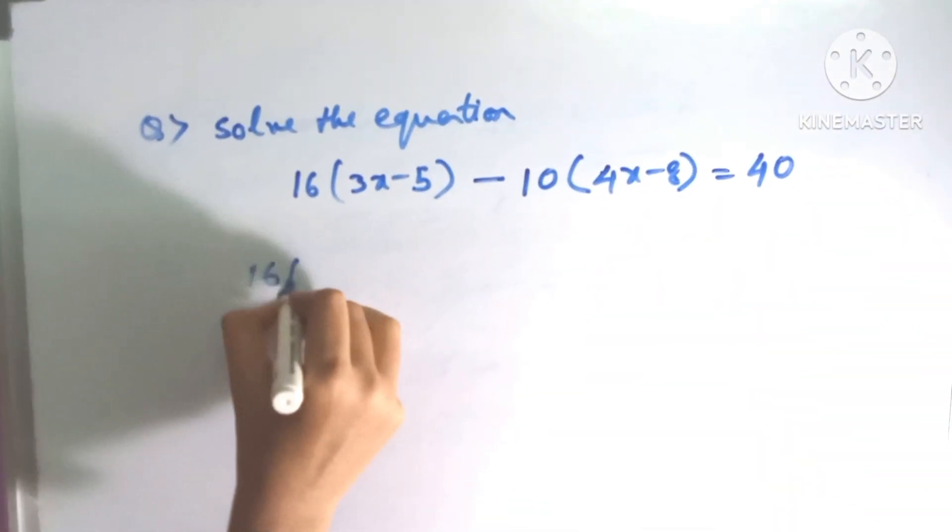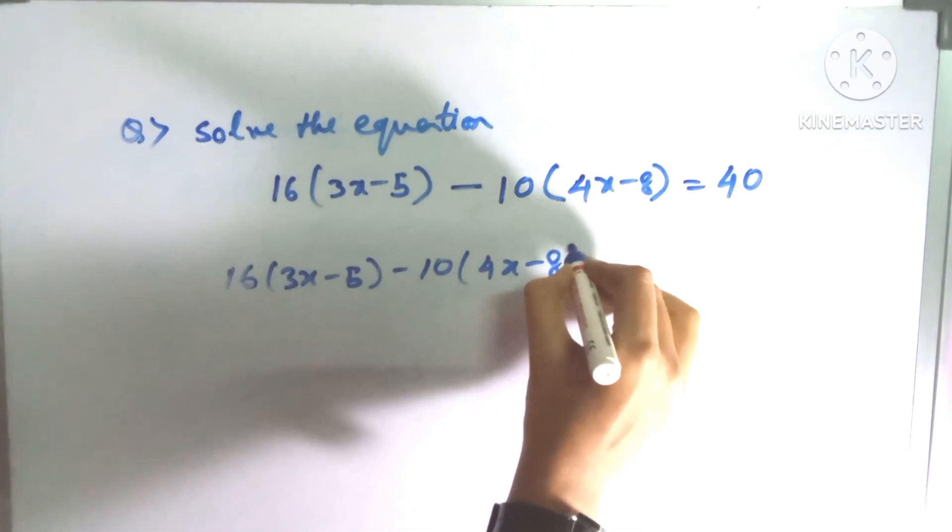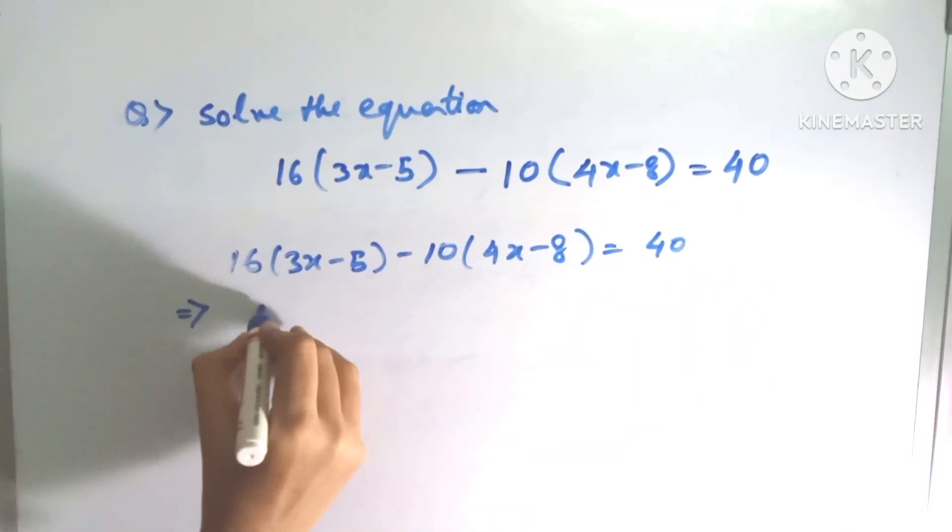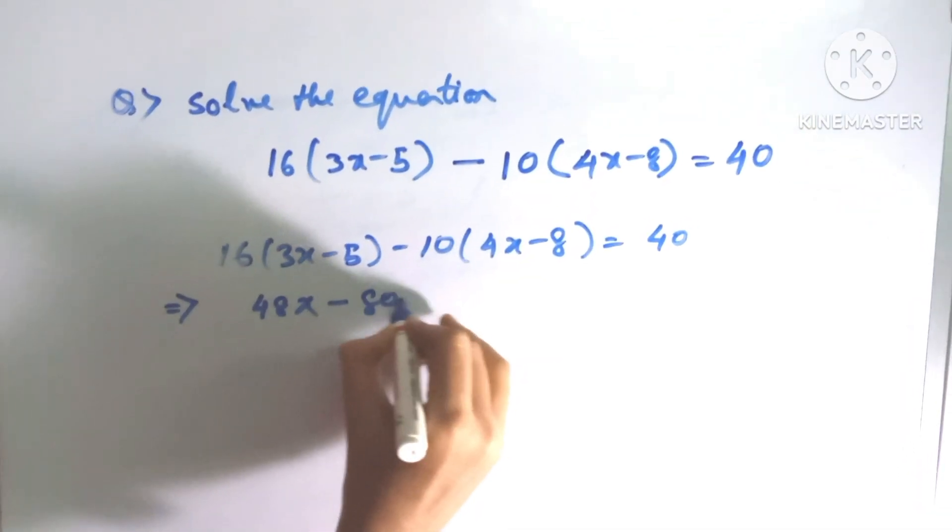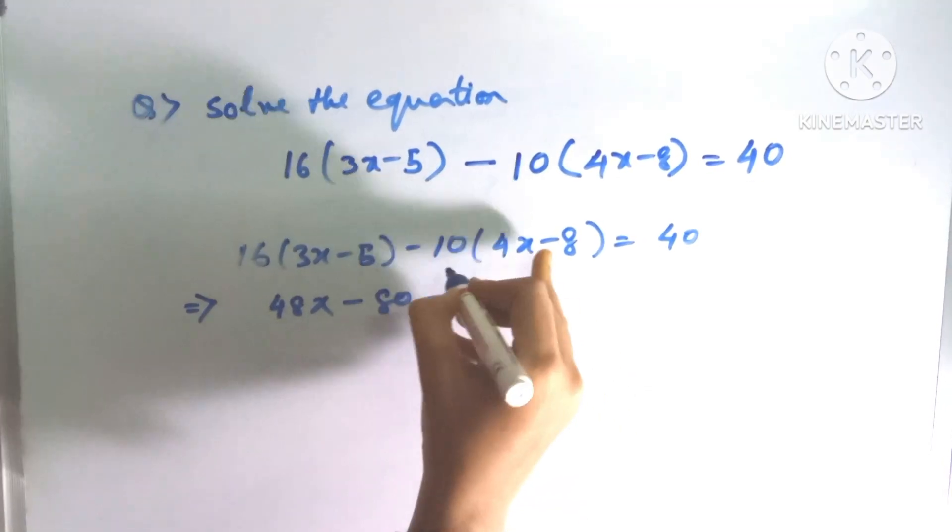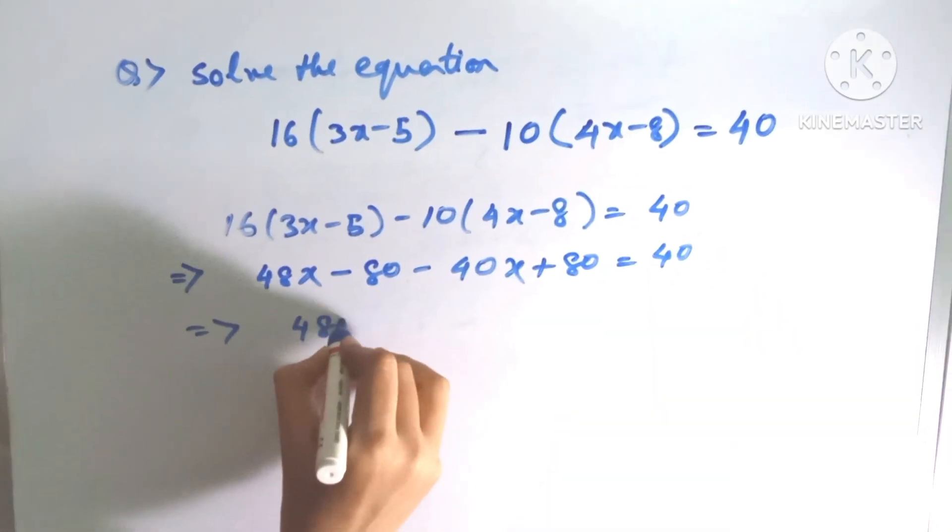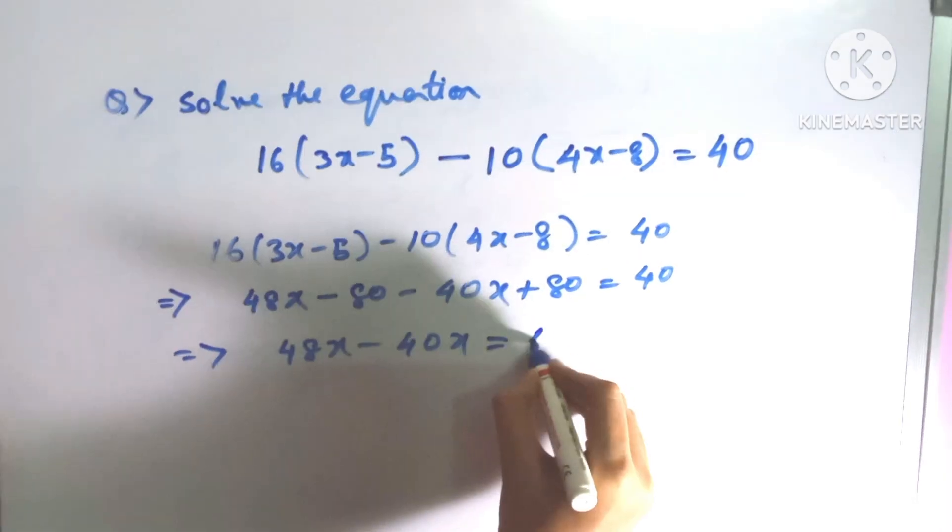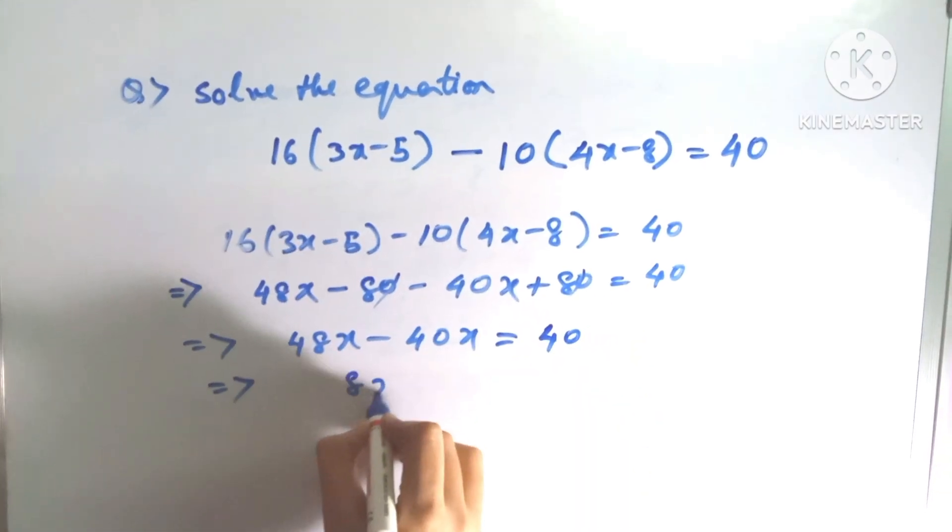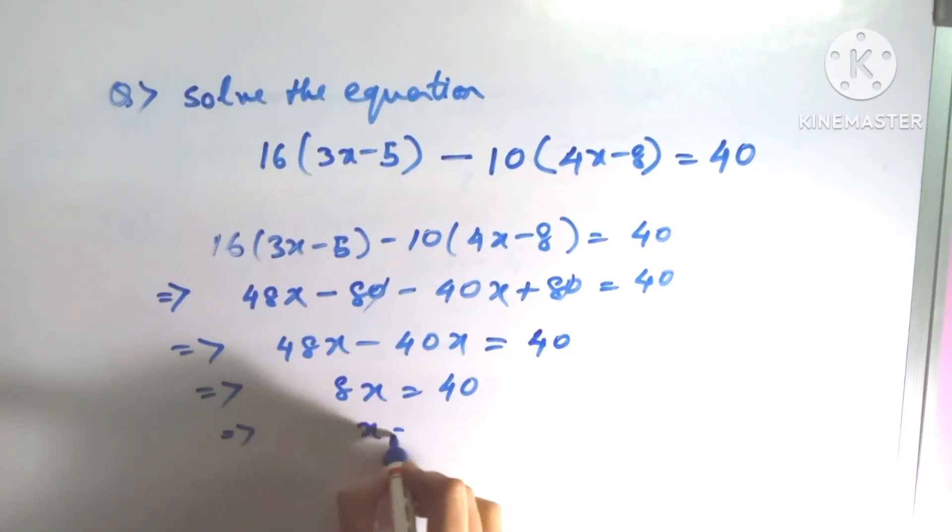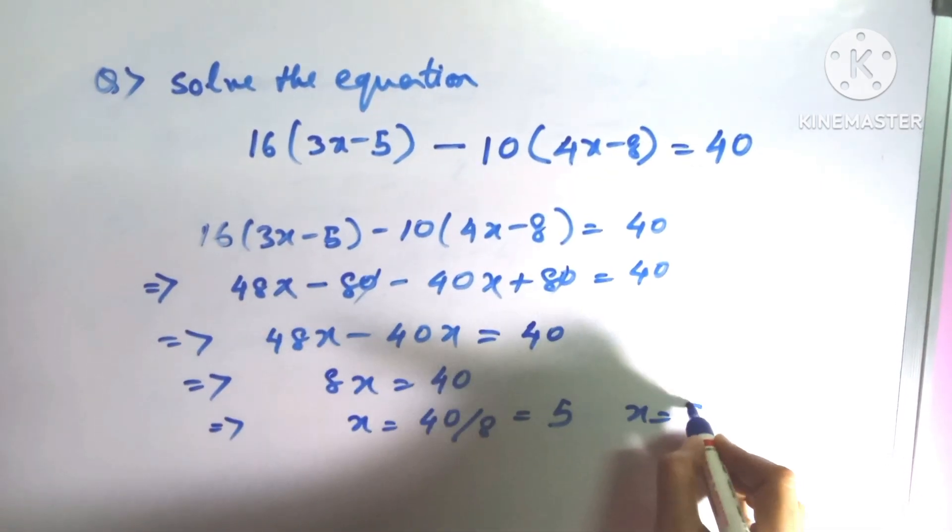Now let's see another example. Here a given equation is there and I have to solve the equation, means we have to find out the value of X. To find out the value of X, I have to solve the first bracket here first, and after getting the values we have to separate the plus signs in the left side and negative signs in the right side, and then we have to find out the value of X. So after solving the equation, we got the value of X equals 5.